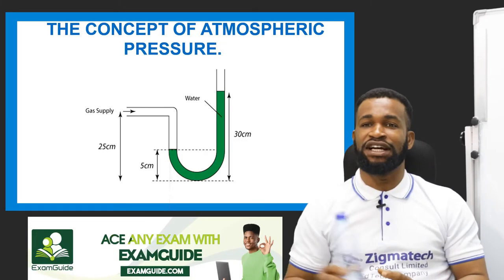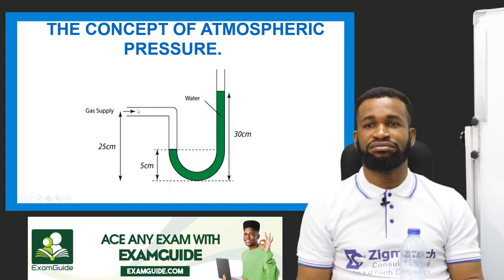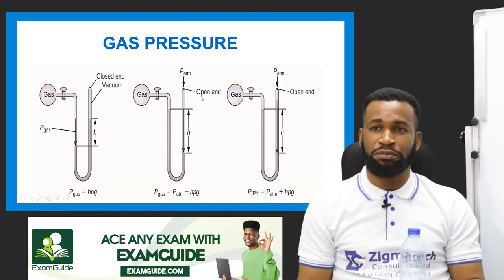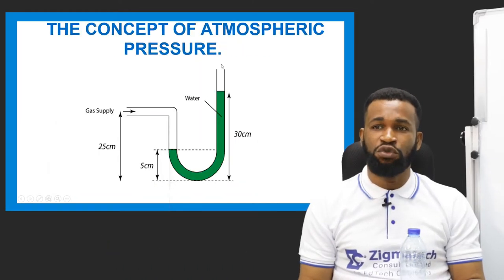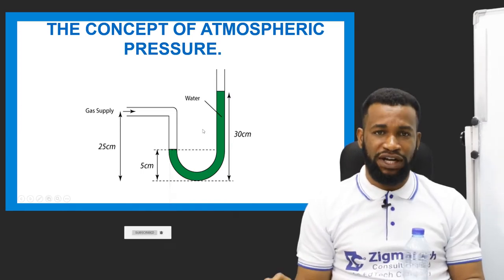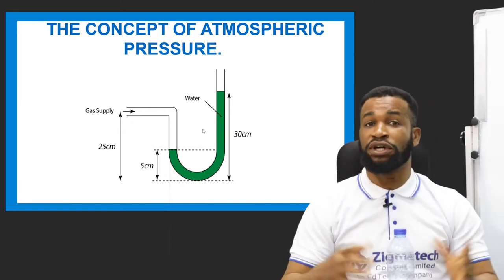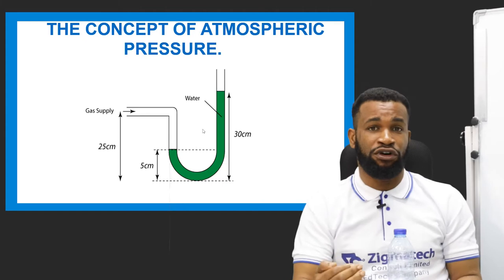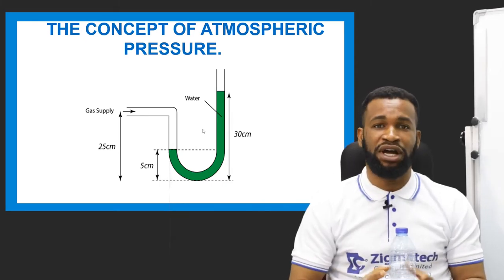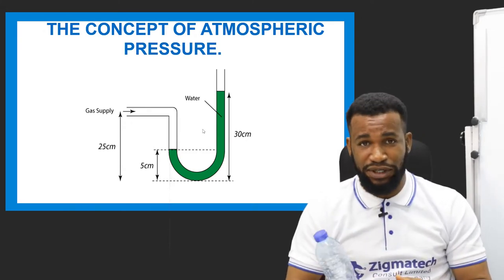The picture on the screen talks about the pressure of the atmosphere which enters through this path and then the gas supply. This is a follow-up of the previous class we treated on pressure, where we talked about liquid pressure and solid pressure. But now, we are looking at atmospheric pressure.